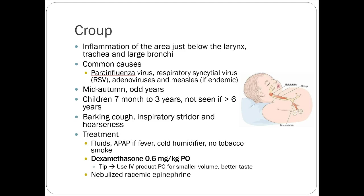The IV dexamethasone vial can be given orally — anything IV can be swallowed and will absorb normally in the GI tract. Racemic epinephrine can also be used nebulized for croup to cause local vasoconstriction and reduce airway inflammation. Acute bronchiolitis: a lower respiratory tract infection usually caused by RSV, occurring in children less than two years old, typically November to April. It looks similar to a common cold but potentially more severe — fever, possibly concurrent otitis media.